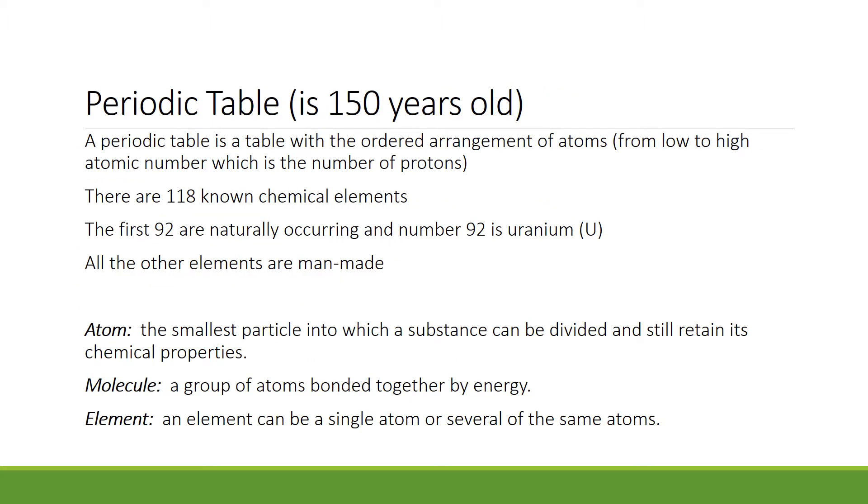In order to understand chemistry, we need to look at how chemistry is organized. Part of that organization is a table called the periodic table. This is where there is an ordered arrangement of atoms going from low to high atomic number.